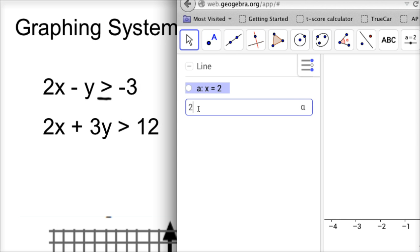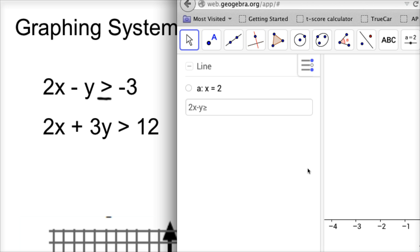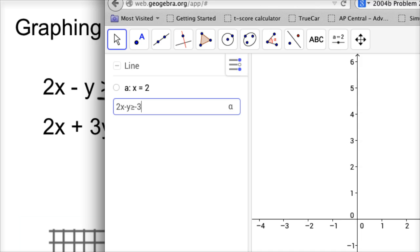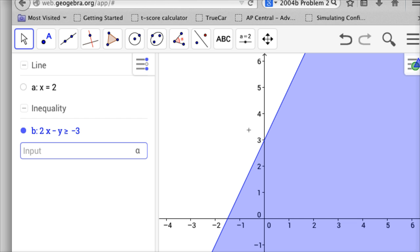So you'd go 2x minus y. And now we need a greater than or equal to symbol. Well, there isn't one of those on the keyboard that I'm aware of, so I'm going to go over here to the symbol button. Click on that, and you can see it right there, greater than or equal to. So I'll click on that, and then negative 3. And I'm going to hit return, and there is the equation, 2x minus y is greater than or equal to negative 3. All of these shaded points in blue are true in this equation, including our 2, 1, which is right here.